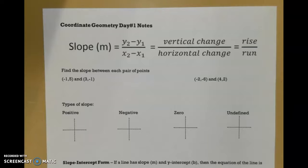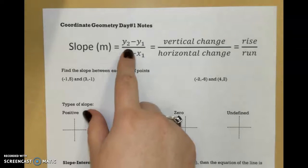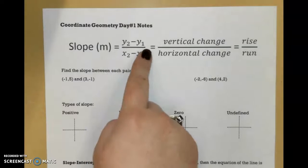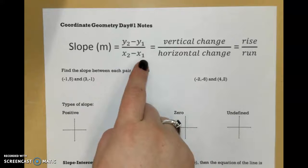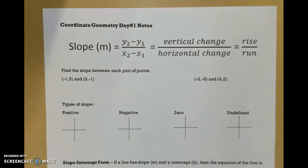Starting off with some good old-fashioned slope. Our slope is our vertical change over our horizontal change, or our rise over our run. And we find that by subtracting y2 minus y1 over x2 minus x1.